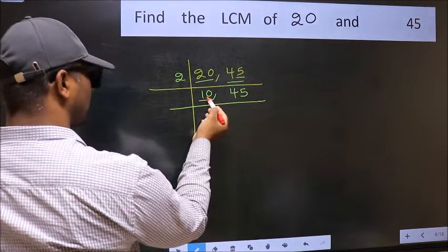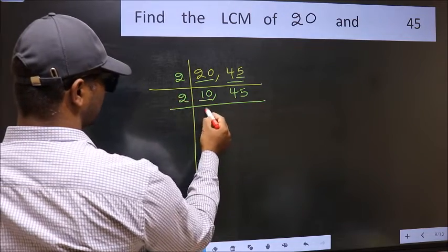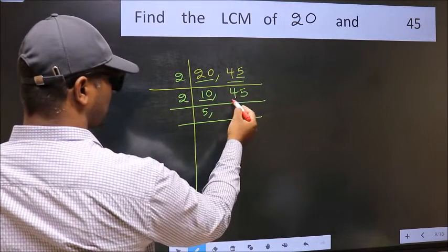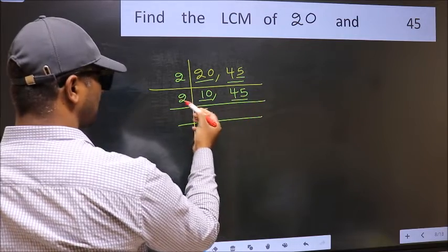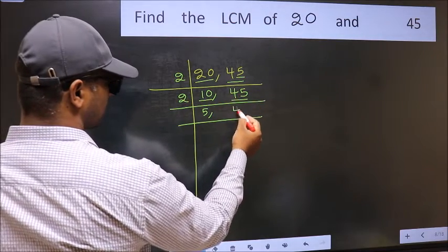Now here we have 10. 10 is 2 fives, 10. The other number 45, not divisible by 2, so you write it down as it is.